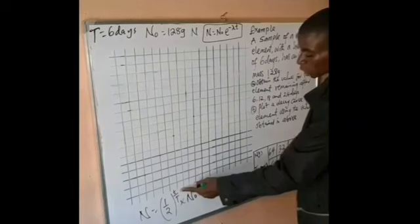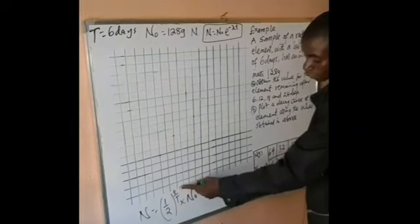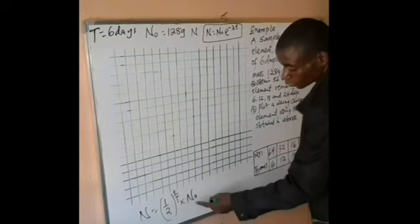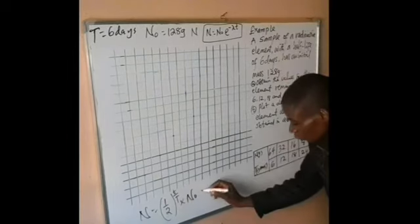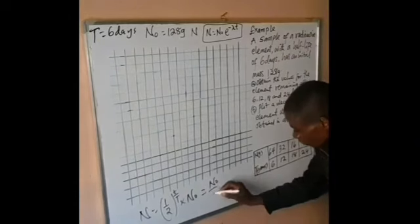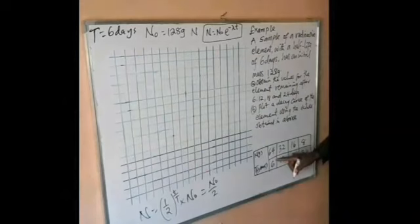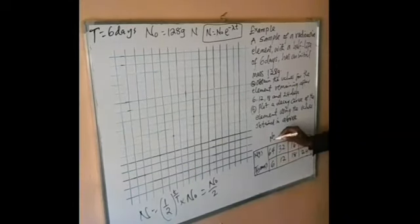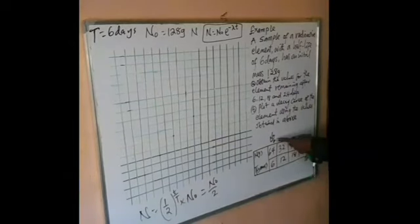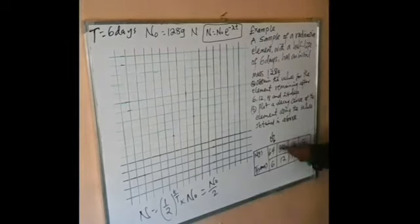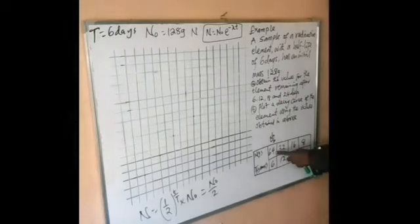When T is equal to 6, we have 6 divided by 6, which gives 1. So (1/2)^1 multiplied by N₀ gives N₀ over 2. Our N₀ is 128, so 128 divided by 2 gives us 64. That is the first value.